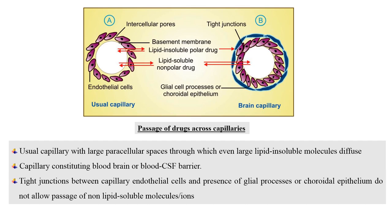As you can see in the diagrams, there is a usual capillary and a brain capillary. A usual capillary has high paracellular spaces through which even large lipid-insoluble molecules can diffuse. In contrast, a brain capillary constituting the blood-brain or blood-CSF barrier has tight junctions between capillary endothelial cells and the presence of glial processes or choroid epithelium, which do not allow the passage of non-lipid soluble ions or molecules.